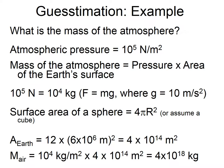There's a caveat: the mass of CO₂ is not just the mass of carbon. Carbon has a mass of 12 and CO₂ has a mass of 44. So to go from carbon mass to CO₂ mass, we multiply by 44/12. That gives us the mass of CO₂ added to the atmosphere.